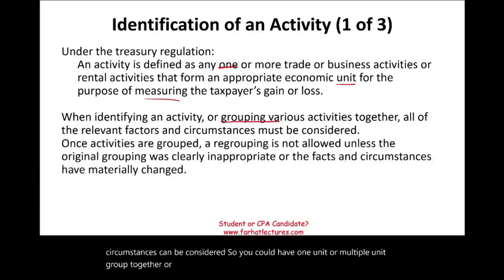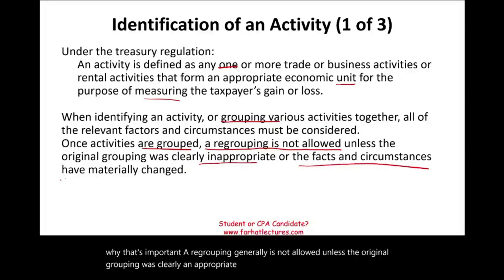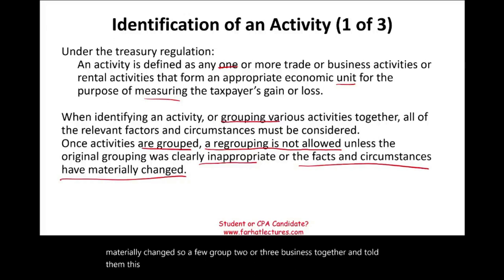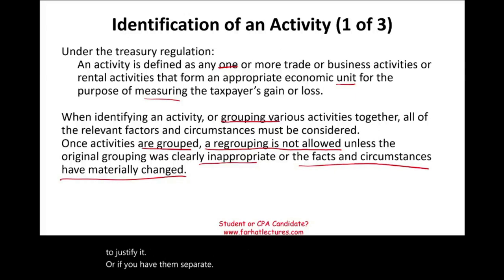Once activities are grouped, regrouping is generally not allowed unless the original grouping was clearly inappropriate or the facts and circumstances have materially changed. So if you group two or three businesses together and call it one unit, then change your mind, you have to justify it. It's allowed, but you have to justify it.